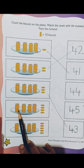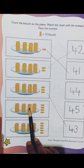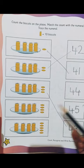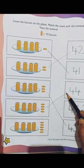Then again 10, 20, 30, 40 and 4 biscuits. 1, 2, 3 and 4. So it becomes 44.